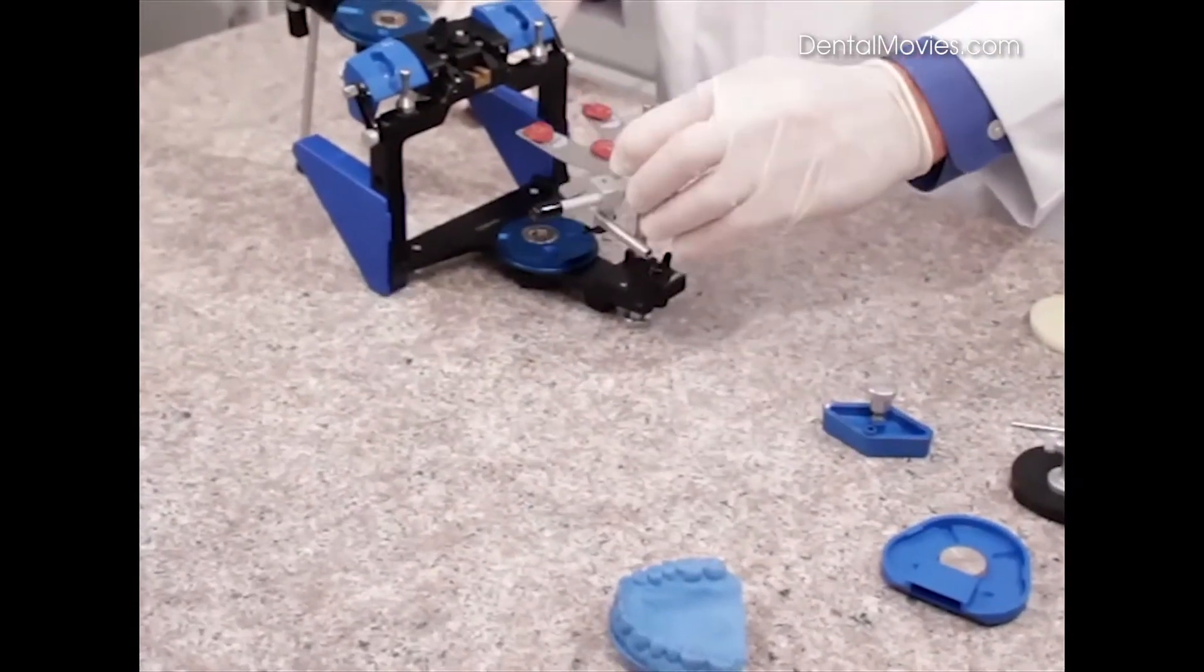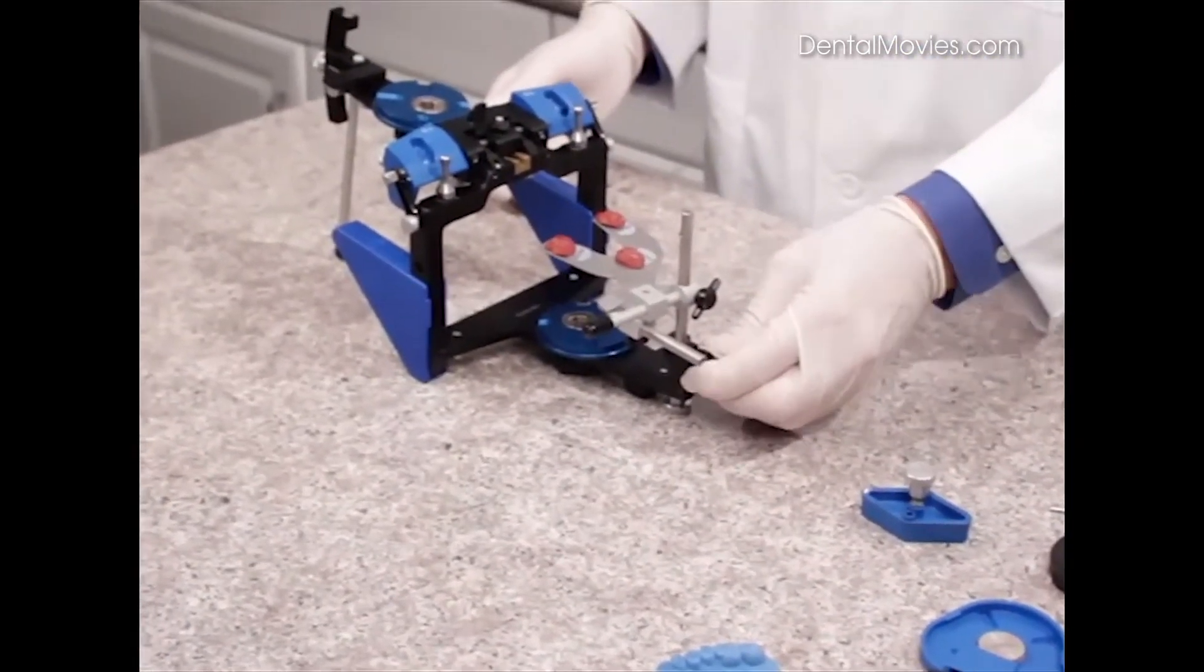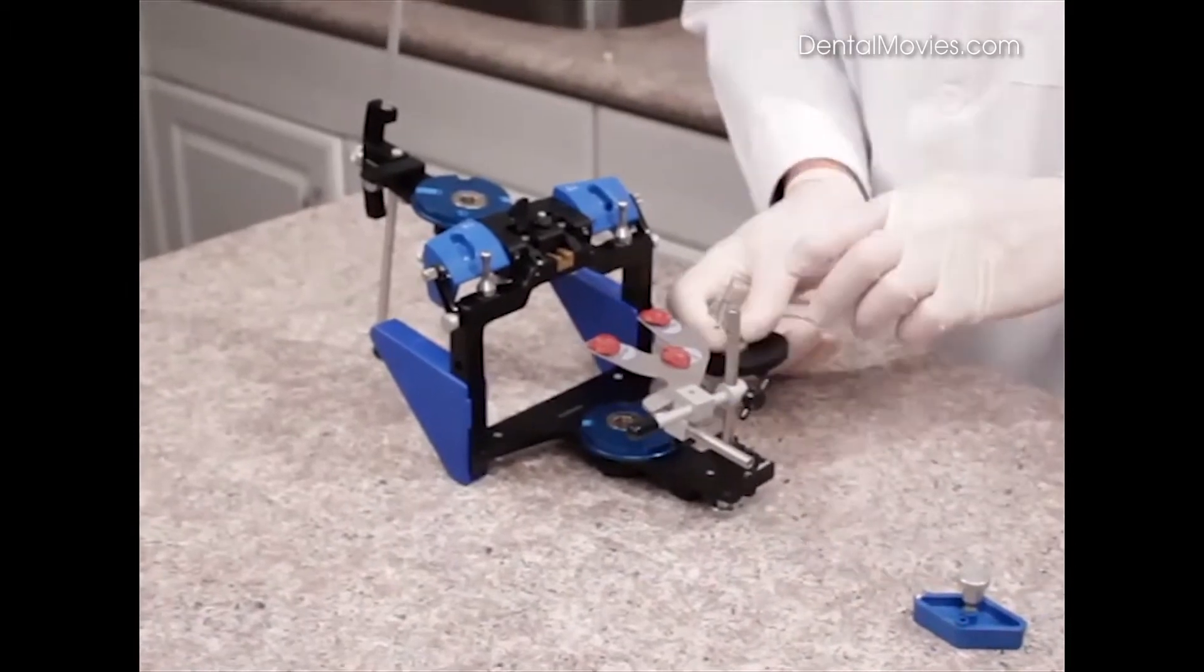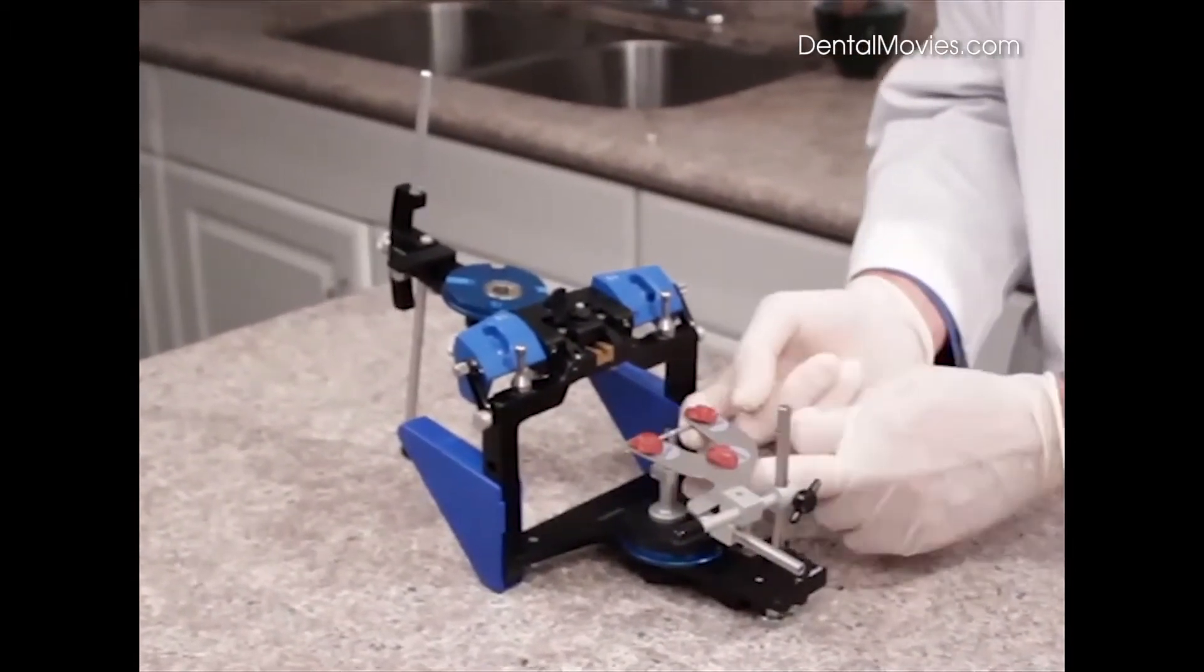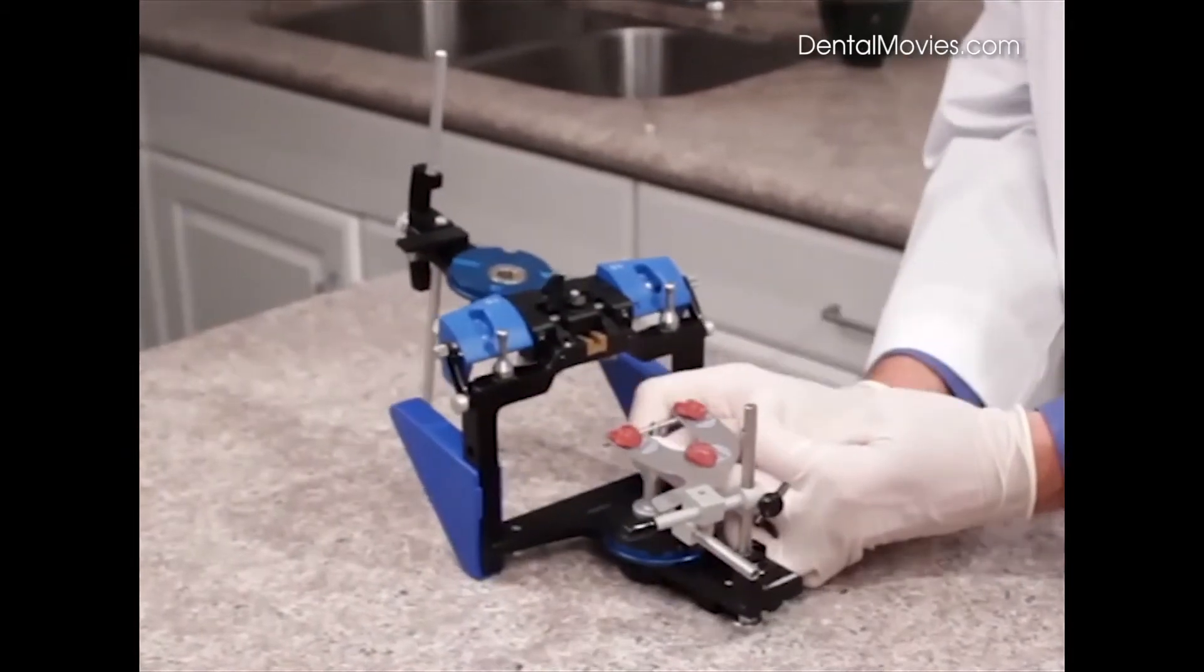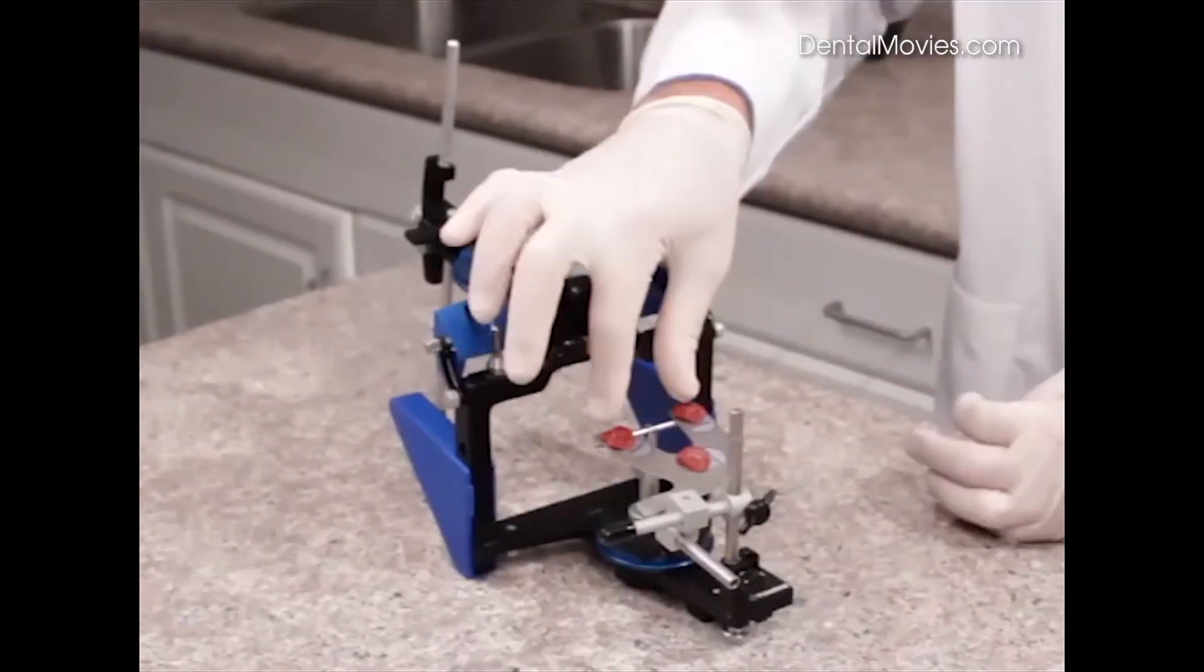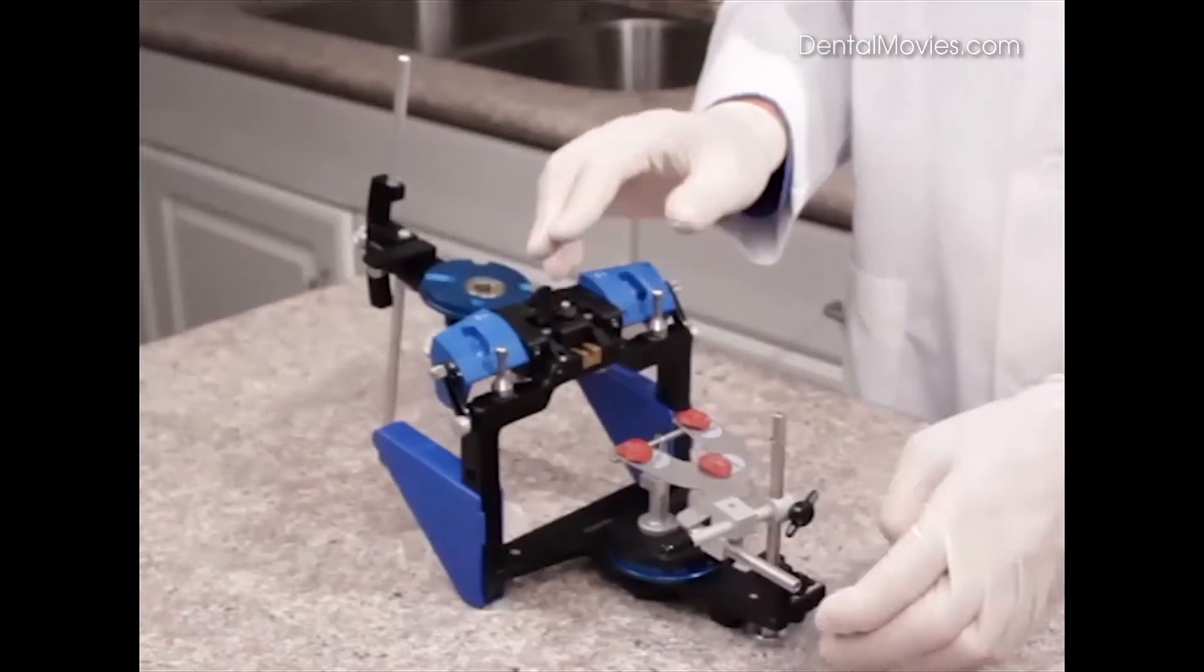We can now add our bifork assembly to the mounting fixture and tighten it into place. We do have a bifork support system, which we can index to the lower magnetic plate, and we can raise the teeter-totter up underneath the bifork and tighten it in place with the screw, creating this nice, solid support for the cast during the mounting procedures.